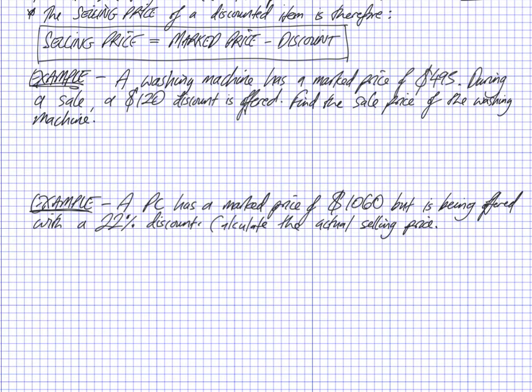So a washing machine was priced at $495 during a sale. They're offering a $120 discount. What's the sale price of the washing machine? So selling price is going to be the marked price of $495 minus $120. So that's going to be $495, $395, $375 discounted price.